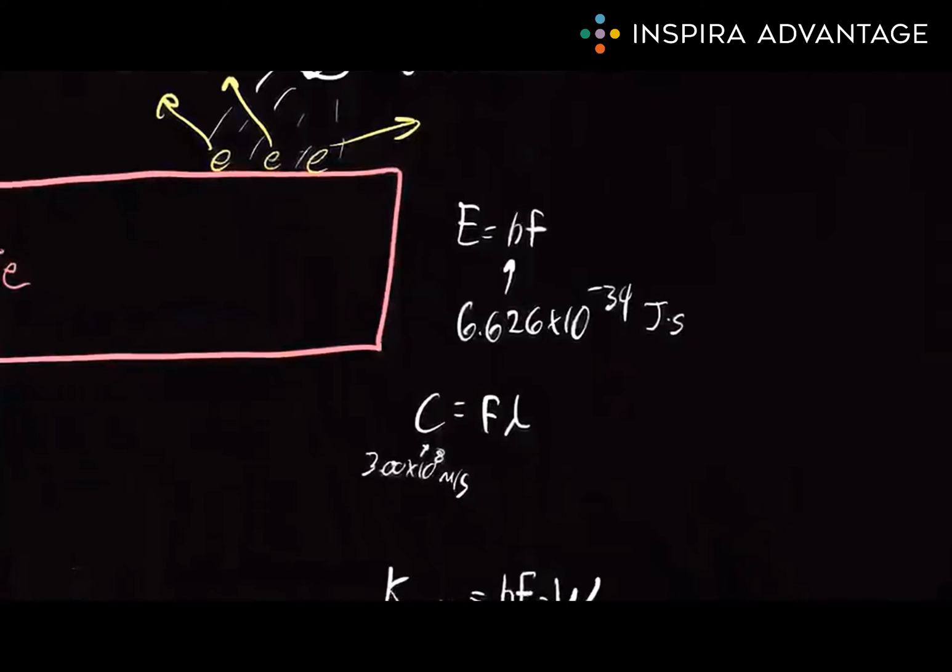Planck's constant is a very small number, 6.626 times 10 to the negative 34 joule seconds, to be precise. But despite its size, it has a tremendous impact on the world at a quantum level.